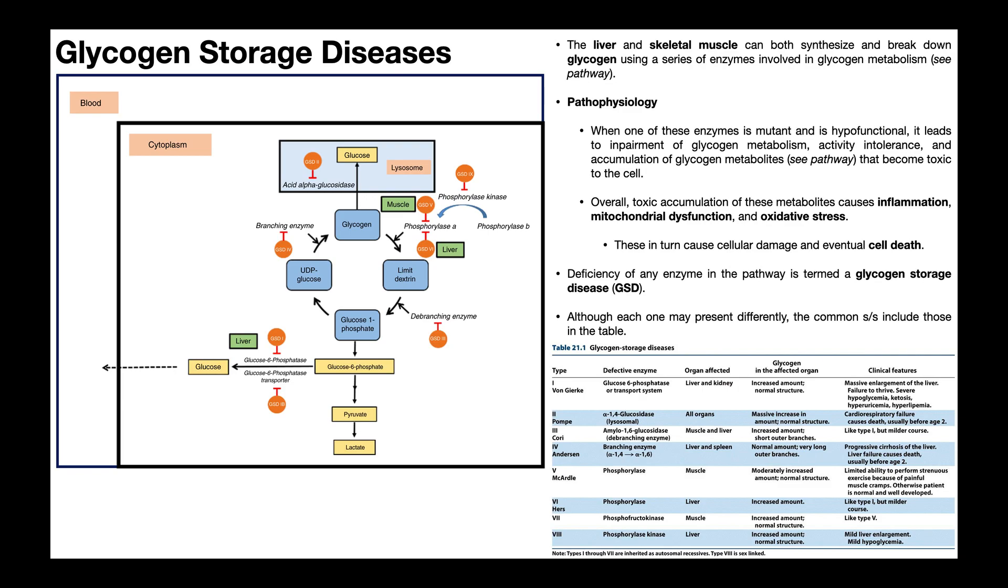This is a group of diseases, not just one, and each disease type is characterized by a deficiency of a different enzyme somewhere in this pathway for glycogen metabolism. Depending on which enzyme is mutant and deficient, there's going to be slightly different clinical features that cause the disease to either be milder or more severe.